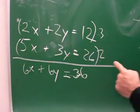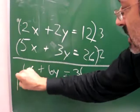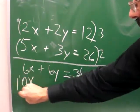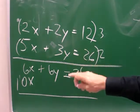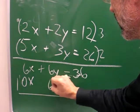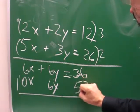Now, 2 times 5x is 10x. 2 times 3y is 6y. 2 times 26 is 52.